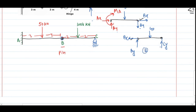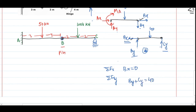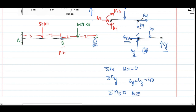Starting with the second free body diagram (section BC): for horizontal force balance, there is only Bx, so Bx = 0. For vertical force balance: By + Cy = 40, with two unknowns, so we need the third equation. Taking moment balance at point B — where Bx and By both pass through and have zero effect — leaves 40·2 and Cy·4.